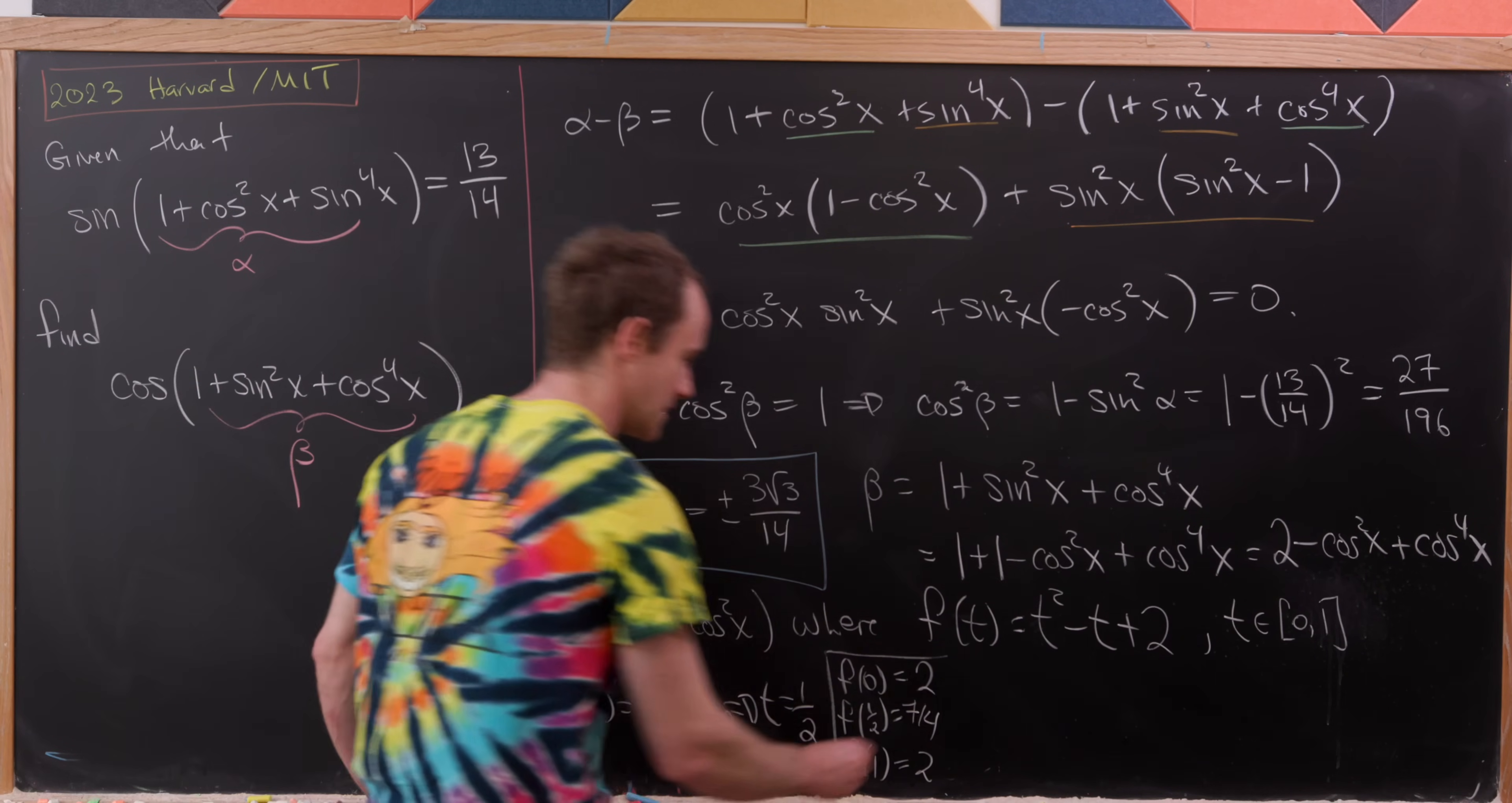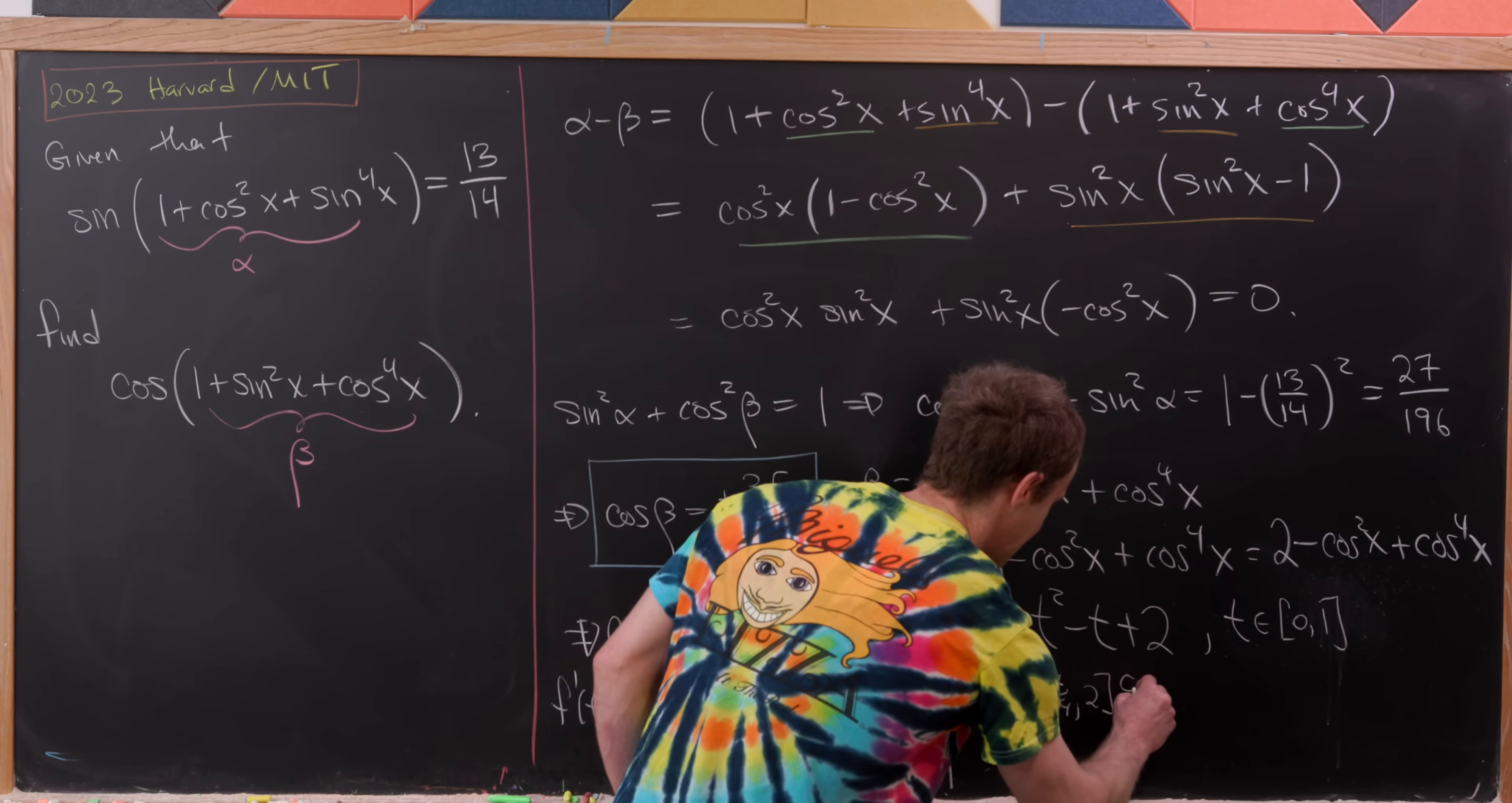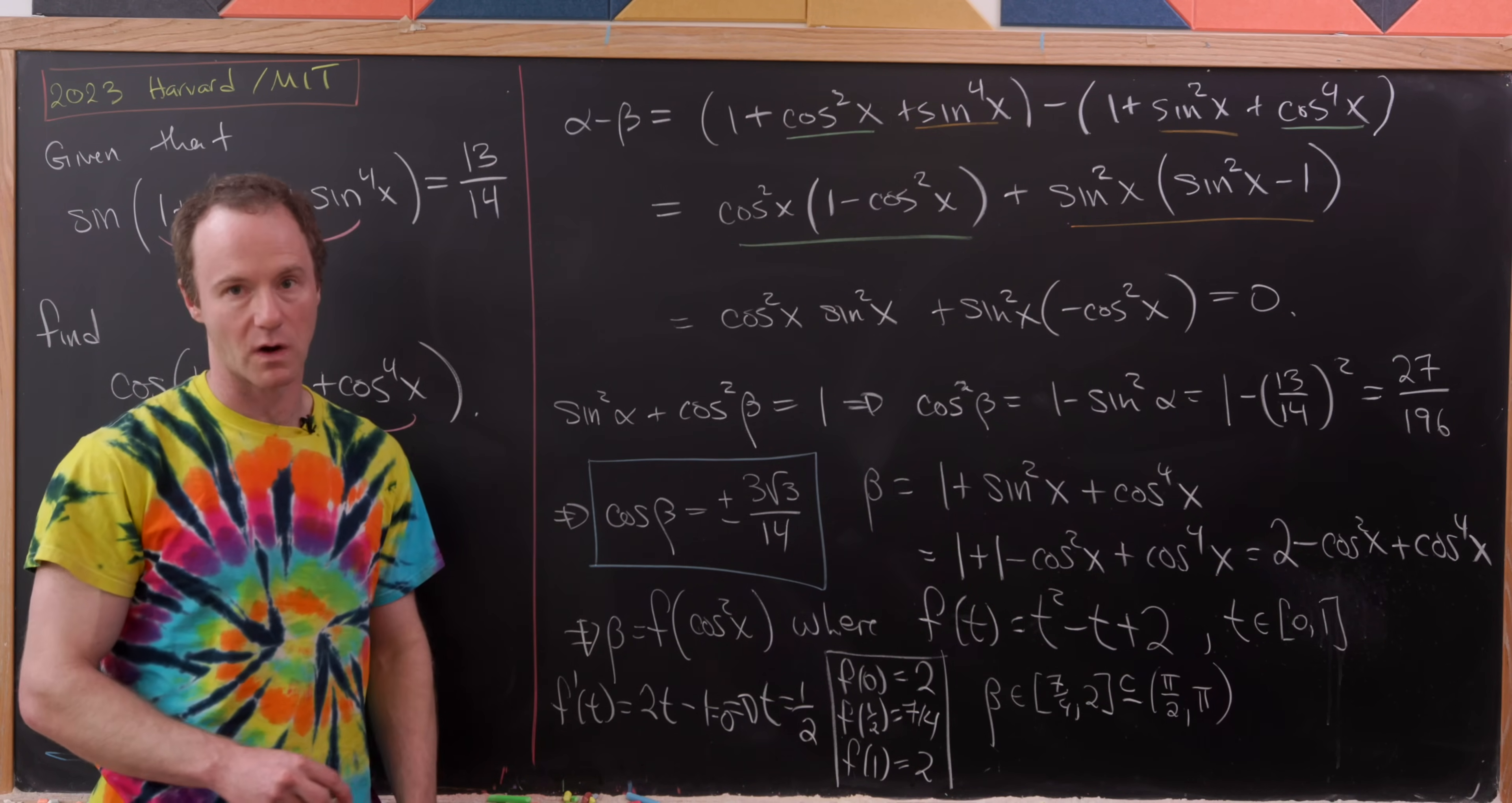So what does that mean? Well, that means that beta is going to be between 7/4 and 2 by the extreme value theorem. So let's write that down—it's going to be in the interval [7/4, 2]. But now let's observe that this interval from 7/4 to 2 is going to be between π/2 and π. In other words, it's in the second quadrant. But what do we know? We know cosine is negative in the second quadrant.